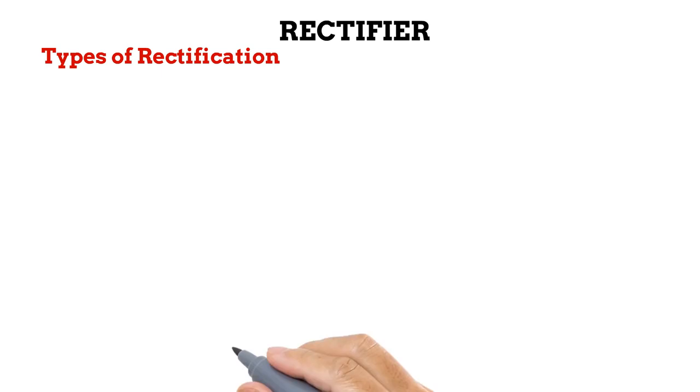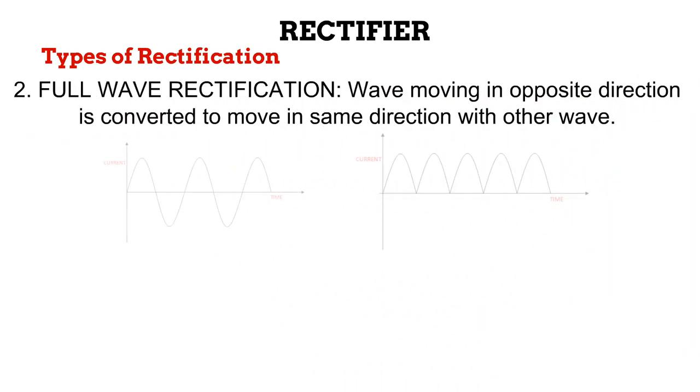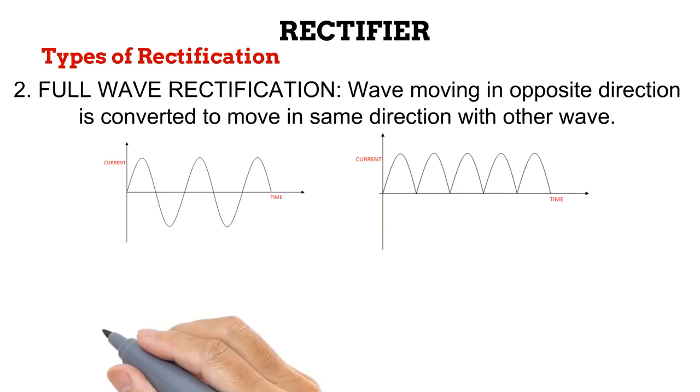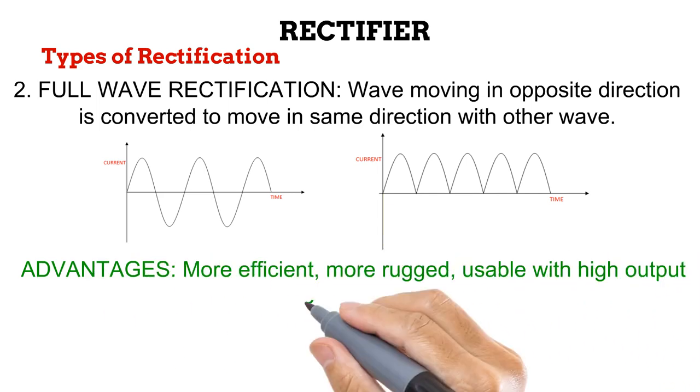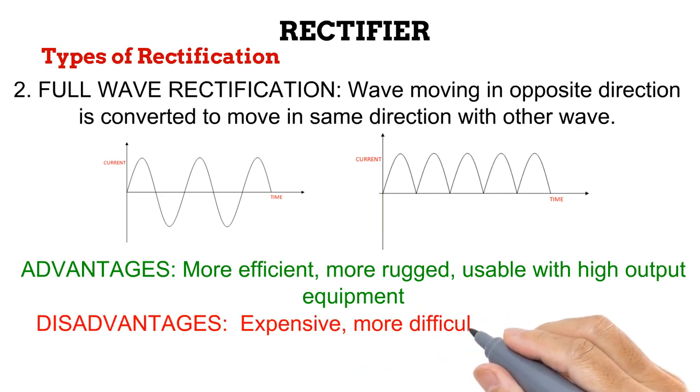Next is full-wave rectification. In this, the current moving in the opposite direction is converted and made to move in the same direction with the other current. As you can see on the diagram, no half-cycle is discarded, rather, the bidirectional current is made to move in one direction. This makes the rectifier much more efficient than a half-wave rectifier. Also, these types of rectifiers are less prone to damage and are thus usable with high-output equipment. They are however more expensive to construct and acquire.